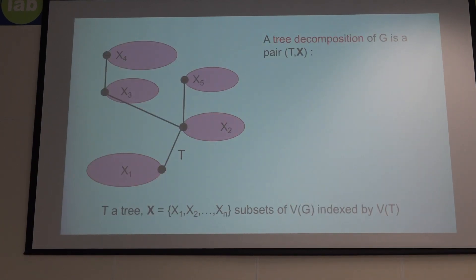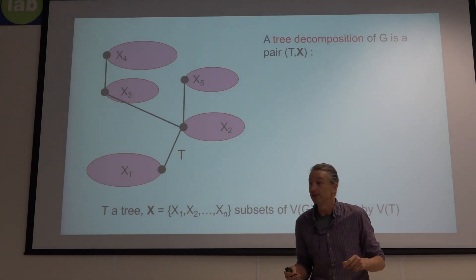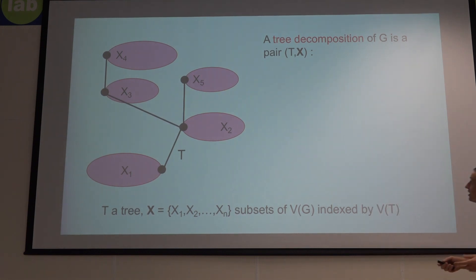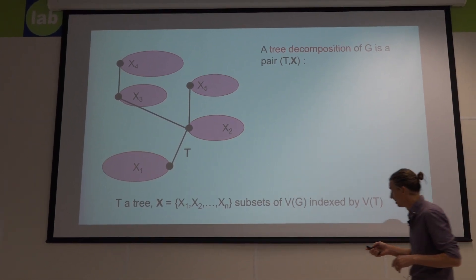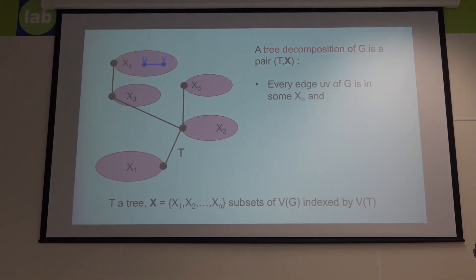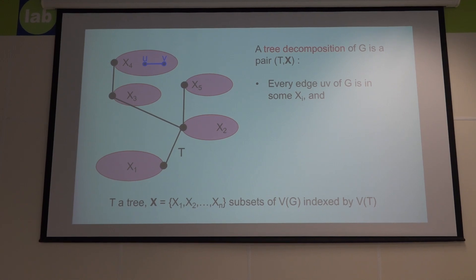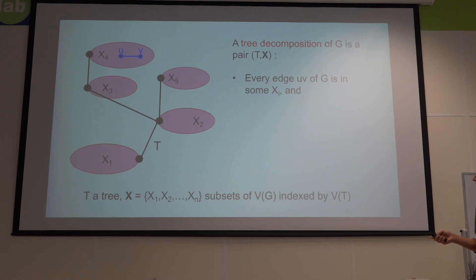So, a tree decomposition. It's a pair: T is a tree, and X are subsets of the vertices of a graph G, indexed by the vertices of the tree. To each vertex of the tree, I assign a subset of the vertices of G. I want every edge of the graph G to be contained inside one of these subsets — we call them bags, the bags Xi. So every edge is in some bag Xi.